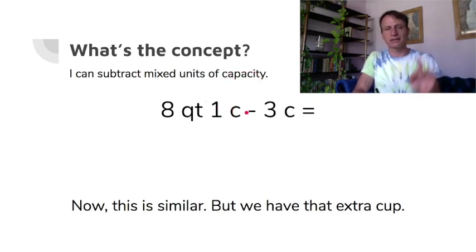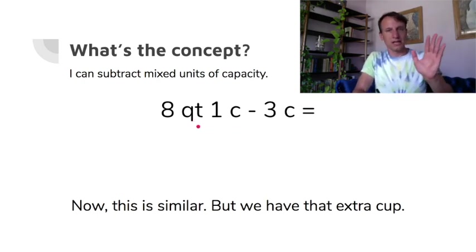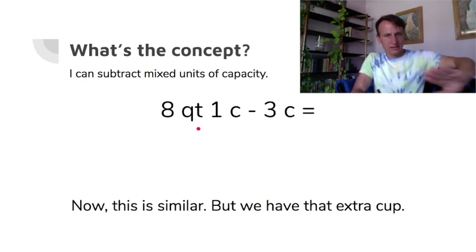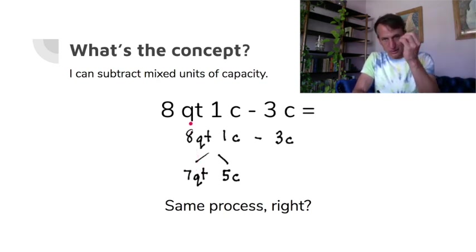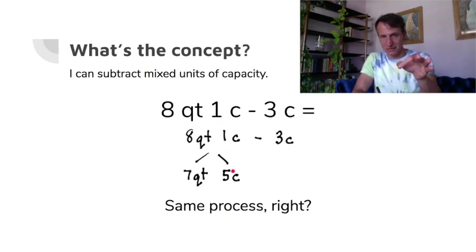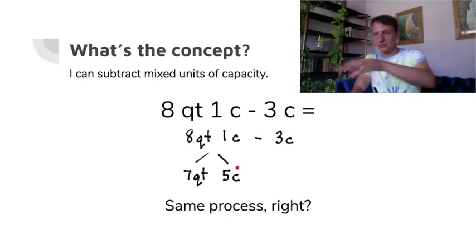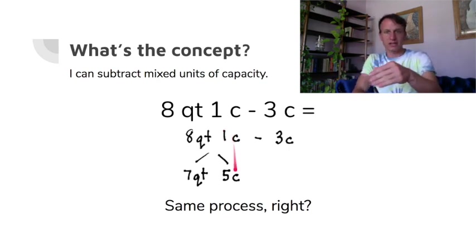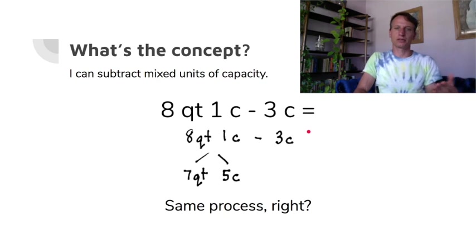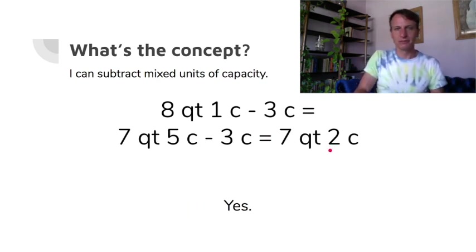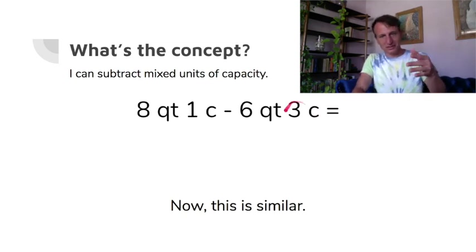Now: eight quarts and one cup minus three cups — again hopping over pints, making a double conversion. Use the second method: set aside seven quarts, pour the eighth quart into four cups, plus the one cup already there gives five cups. Now the subtraction is straightforward: seven quarts and five cups minus three cups equals seven quarts and two cups.